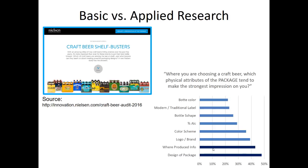An example of applied research comes from Nielsen's craft beer shelf buster study from 2016. It set out to find out how craft beer consumers interact with and react to different types of packaging decisions. One survey question asked respondents: when choosing a craft beer, which physical attributes of the package make the strongest impression? The design of the package and where it was produced were the two most commonly selected items — suggesting that the local home-field advantage talked about in the craft beer industry is alive and well.